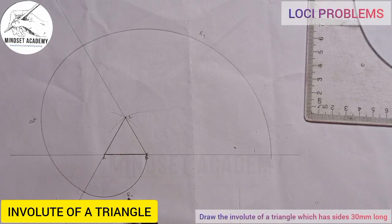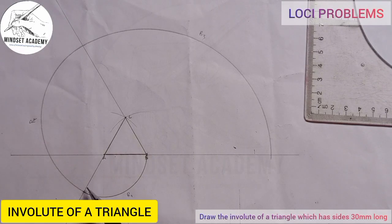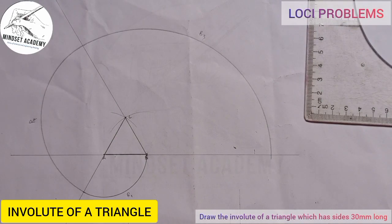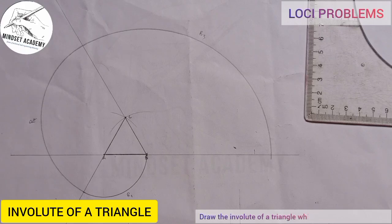It means that between this point and this point we use radius one, between this other point and this point we use radius two, and so on and so forth. This is the involute of a triangle.